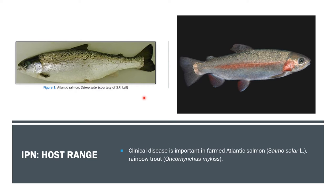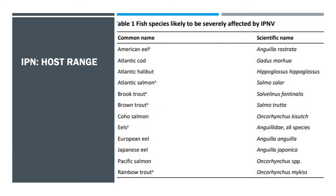The diagram shown here illustrates the Atlantic salmon, Salmo salar, and the rainbow trout, Oncorhynchus mykiss. The virus affects a wide range of marine and freshwater fish species.